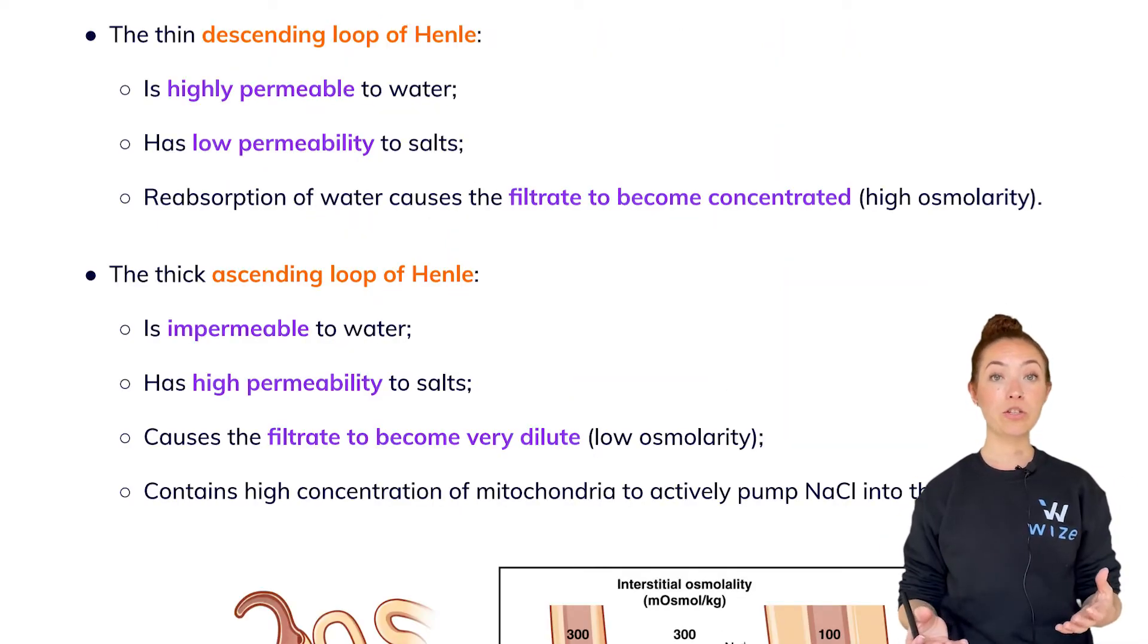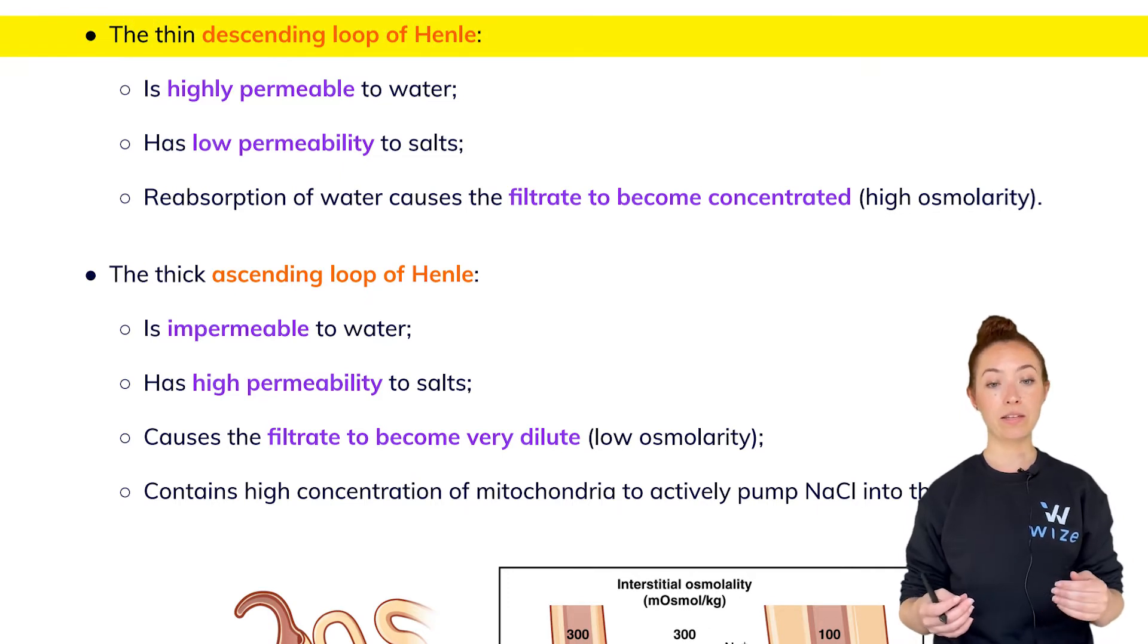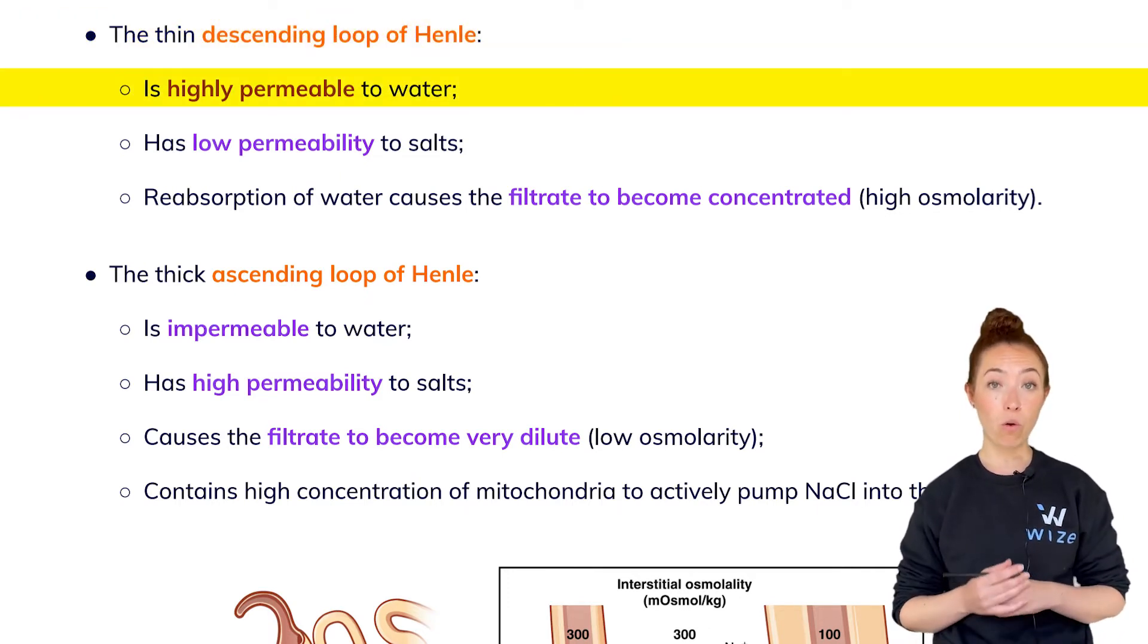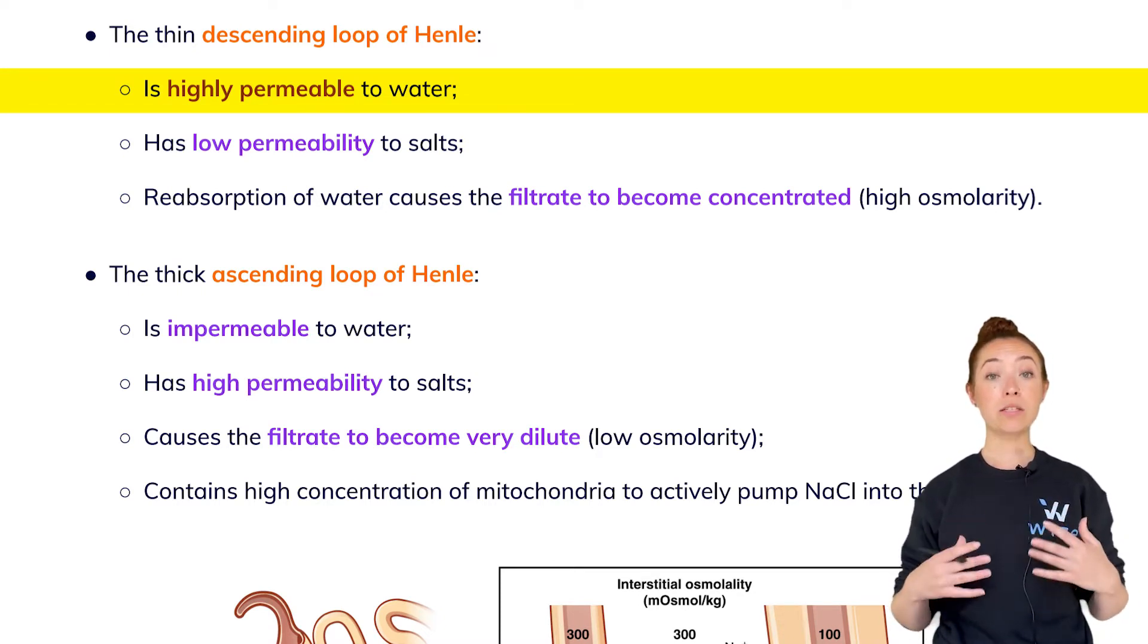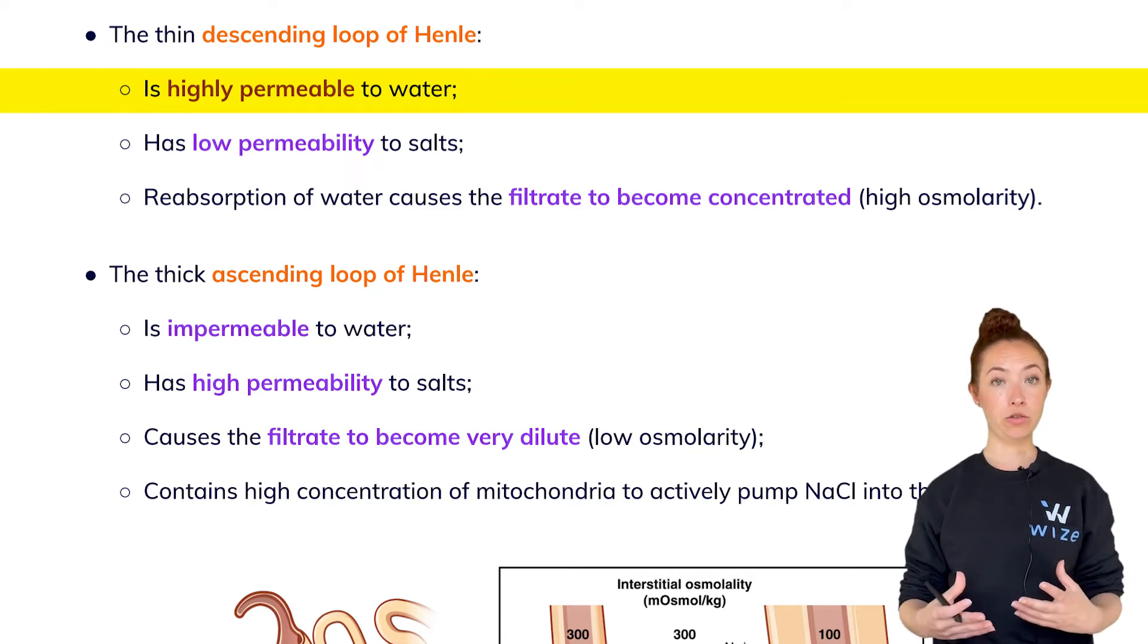Why do we make that distinction? The descending and ascending loop of Henle actually have very different characteristics. The descending loop of Henle is highly permeable to water, which means it can reabsorb water from the filtrate and it does so a lot. This causes the filtrate to become very concentrated.